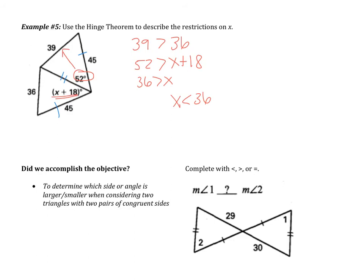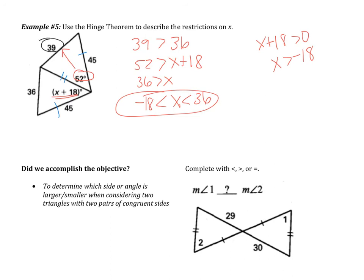Can X be any value less than 36? If X were negative 100, that would give a negative angle, so X can't be just any number less than 36. The angle X plus 18 also has to be at least 0, so X plus 18 must be greater than or equal to 0. Subtracting 18 gives X is greater than negative 18. So X is somewhere between negative 18 and 36. Any value greater than 36 would make the hinge theorem not apply, because X plus 18 must be less than 52.